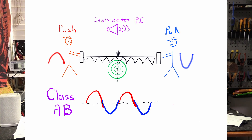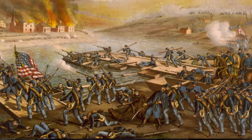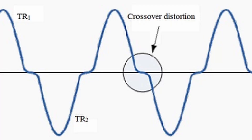I'm going to call this one Class AB. As you can see in the graphic, red goes a little bit into the blue territory and blue goes a little bit into the red territory. We have no crossover distortion, and that's the important thing, because I don't like it.